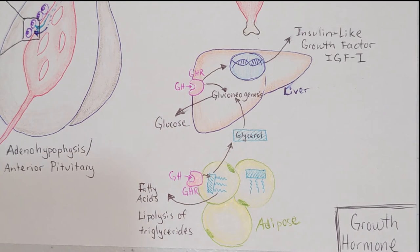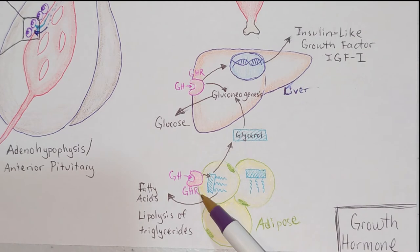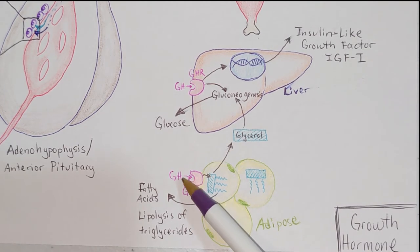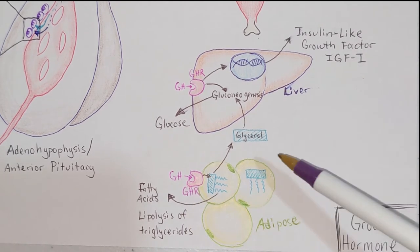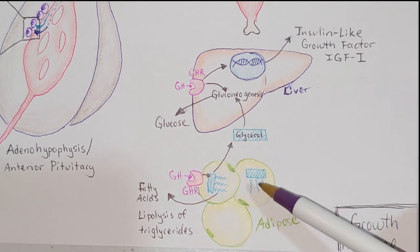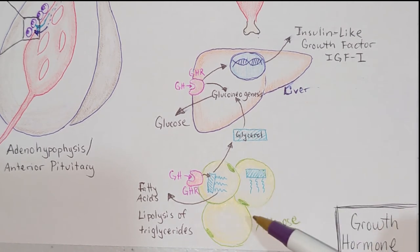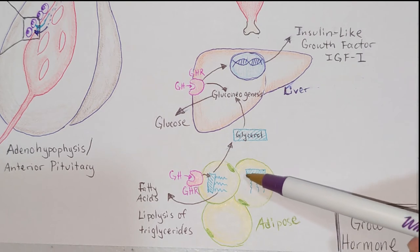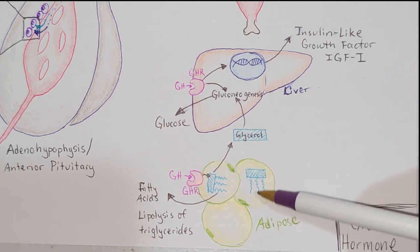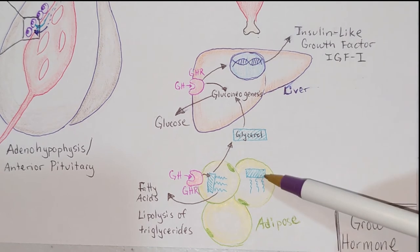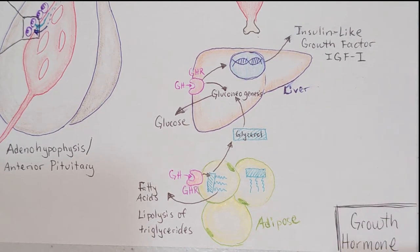This hormone — growth hormone — is going to circulate throughout the body in the bloodstream and essentially only bind to tissues that express the growth hormone receptor. We're going to talk about three different tissues that express growth hormone receptors. The first is adipose tissue — adipocytes, or fat cells — which are storage vessels for triglycerides: a glycerol backbone with individual fatty acids stored as triglycerides within the adipose tissue.